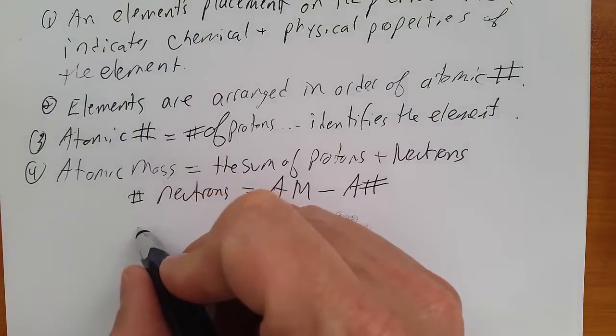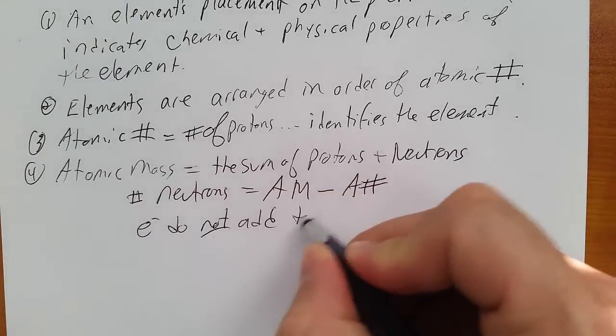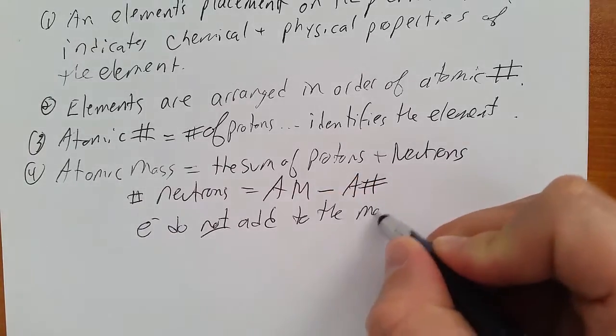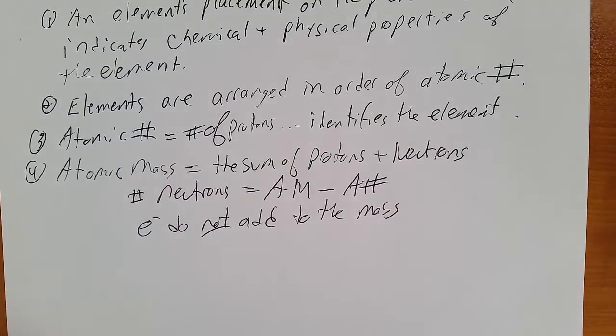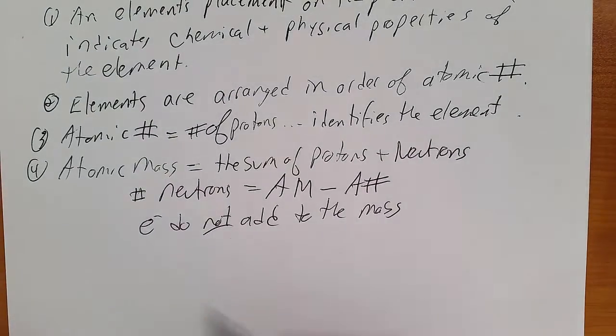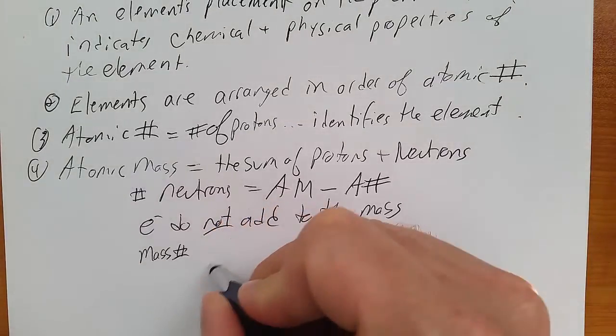And electrons do not add to the mass. We basically say that the mass of an electron is pretty much zero. Now the mass number or the atomic mass on the periodic table is a weighted average of the different isotopes.